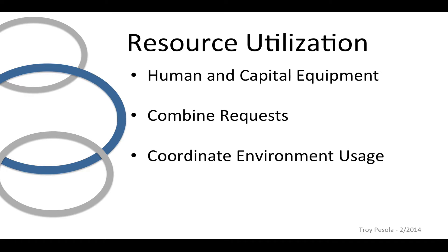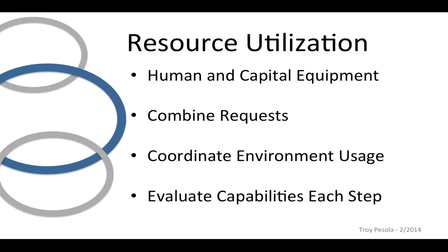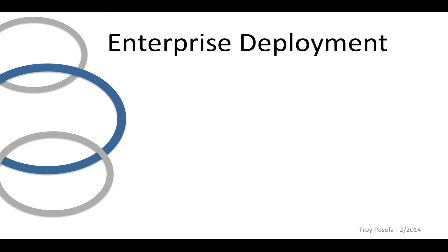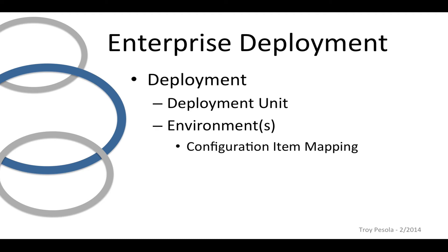As we move from a new idea in development to production environments, we often want to stage that through multiple environments. We need a process that can coordinate environment usage — both who's using it and what they're using — where an environment is a collection of different technologies. As we move through those environments, we also need a way to evaluate the capabilities included and decide if they're ready to move forward to the next environment toward production. Not everything that moves through is ready for customer usage, and we need a way to pull things out to be addressed later. This process is enterprise deployment — it focuses on deployment units, which are standalone sets of capabilities that may or may not go forward as we move through environments.